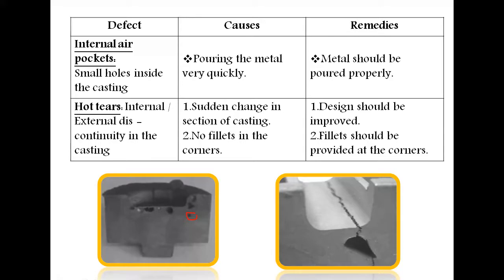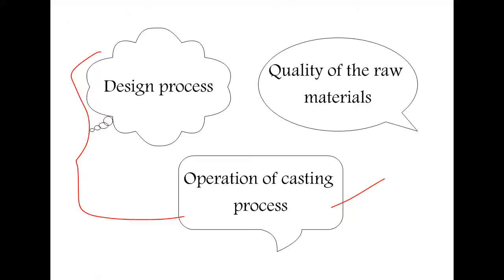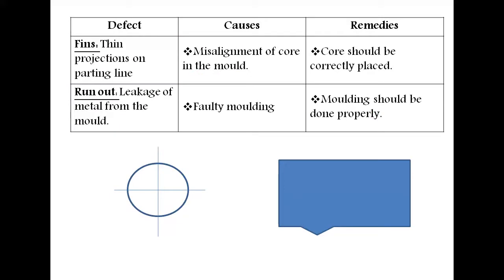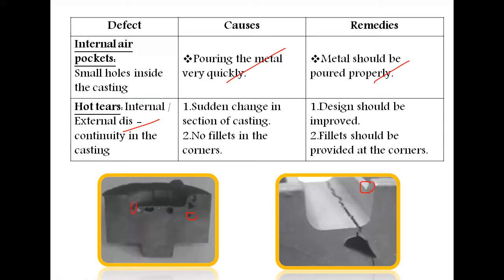Internal air pockets are produced inside components due to pouring the molten metal too quickly. Metal should be poured properly at the optimum conditions to avoid this. Hot tears are internal or external discontinuities caused by sudden changes in section. As mentioned earlier, the design process must follow proper guidelines — fillets should be provided at corners to avoid sudden changes. Design should be improved and fillets should be provided at all corners.